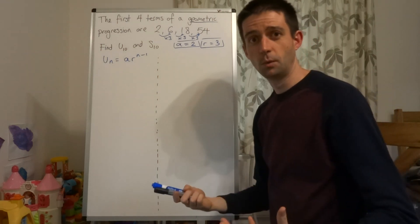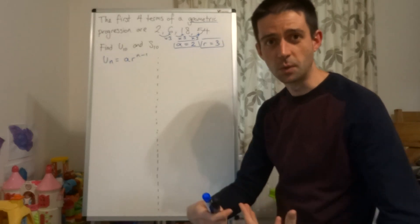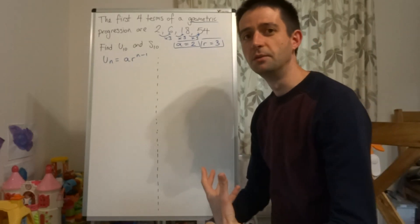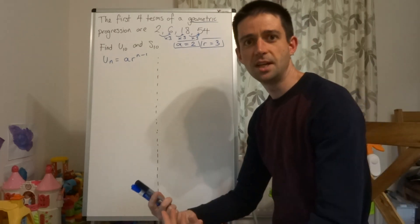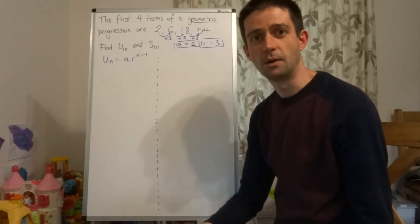Just like the similar rule with arithmetic sequences where it's A plus N minus 1 times D, I need you to be really fluent. If I say to you, what's the fifth term? You say AR to the power of 4. What's the 18th term? You say AR to the power of 17.